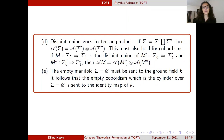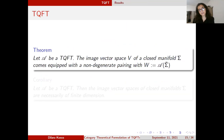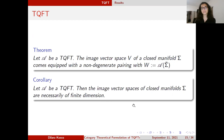We have two important results. Let A be a TQFT. Then the image vector space V of a closed manifold sigma comes equipped with a non-degenerate pairing with W, the image of the reverse sigma. From linear algebra, this means W is canonically isomorphic to the dual of V. If we have such a non-degenerate pairing, all these vector spaces must be of finite dimension. In TQFT, all image vector spaces are finite dimensional — this is not the case with other field theories, where you may deal with infinite-dimensional Hilbert spaces.